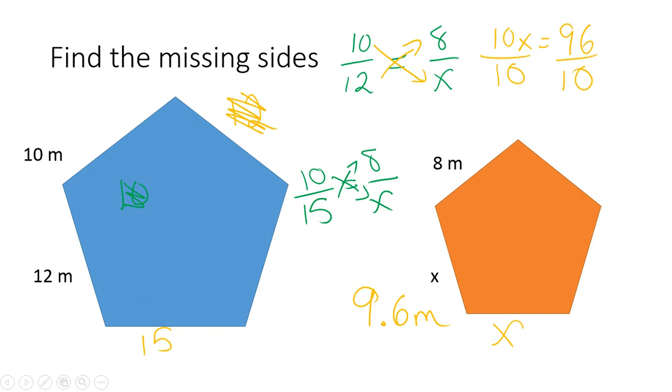8 times 15 is 120. So moving this over here, that would get us 10X is equal to 120. And then we'd solve for X by dividing both sides by 10, getting this X is equal to 12. So that's how you find your missing side. You set up a proportion and then solve for the missing part.